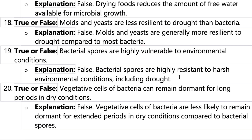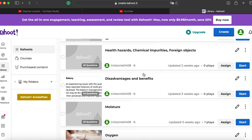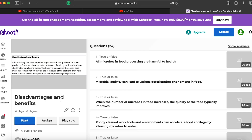Number twenty: vegetative cells of bacteria can remain dormant for a long period in dry conditions. This is false — only the spores can do that, not the vegetative cells inside. So now we'll continue to the disadvantages and benefits of microbes.